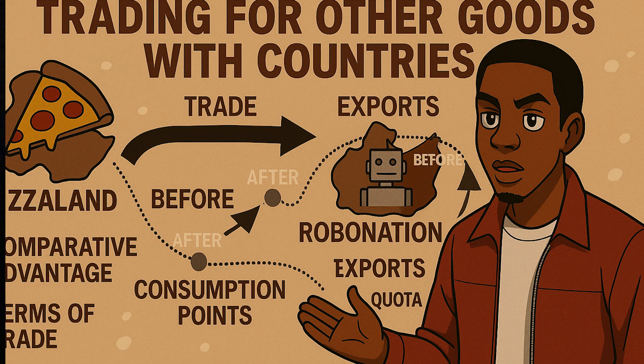A single nation by itself is limited to its own PPC, but with international specialization and trade, a country can consume beyond that limit. Countries specialize in goods they can produce at lower opportunity costs, then trade for other goods. Suppose our country makes robots at a low cost and another country makes pizzas at a low cost. If we specialize in robots and trade robots for pizzas, we can end up with more pizzas and more robots than we could achieve on our own. There are two ways to enjoy more goods: expand domestic capacity through growth, and expand consumption through smart specialization and trade.